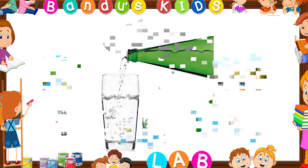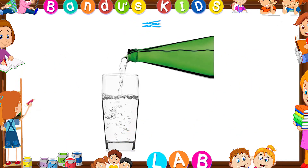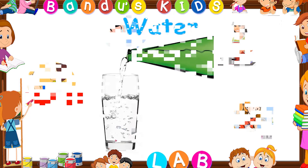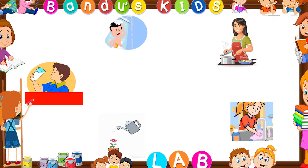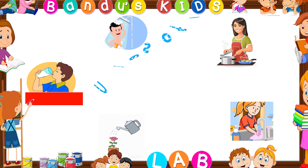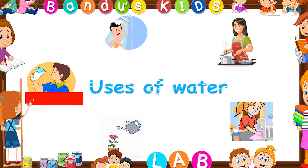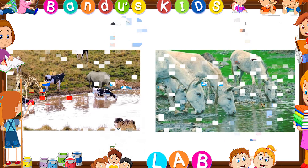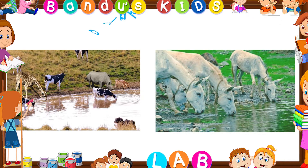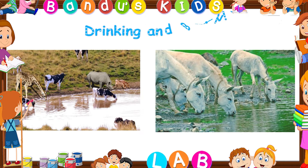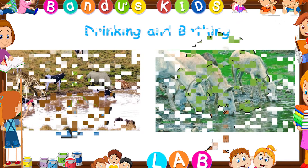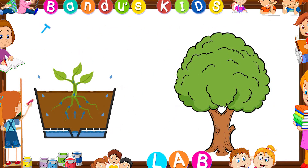Water is colorless and tasteless. Human beings need water for drinking, bathing, cooking, washing, watering, etc. Animals use water for drinking and bathing. Plants and trees use water to grow and produce food.